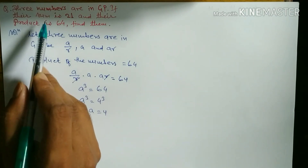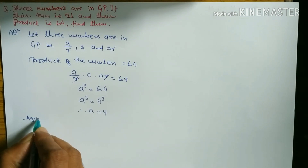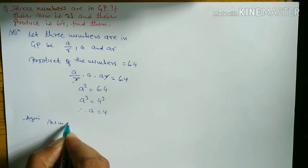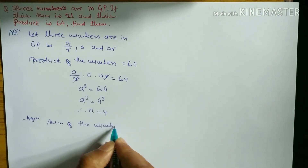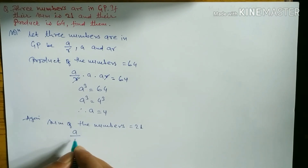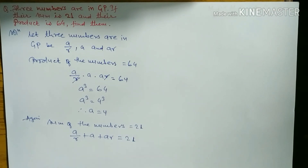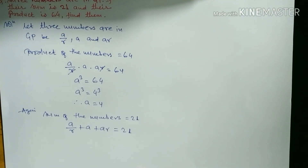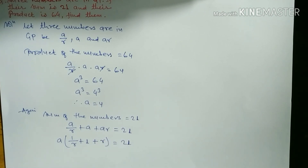According to the question, sum is 21. So sum of the three numbers: a/r + a + ar = 21. We can take a as common, giving a(1/r + 1 + r) = 21.